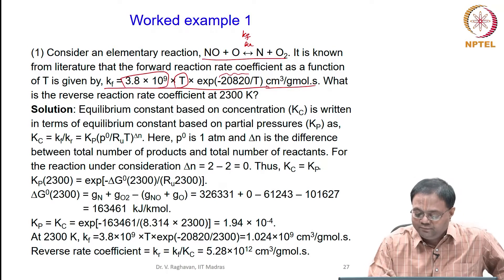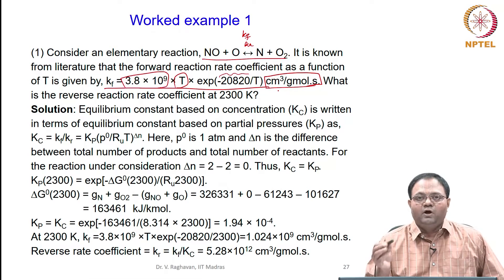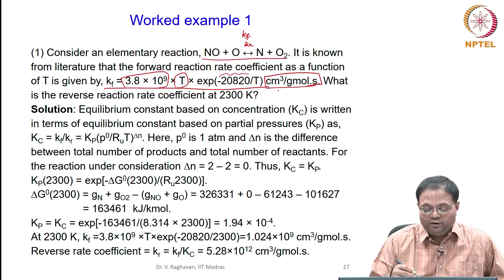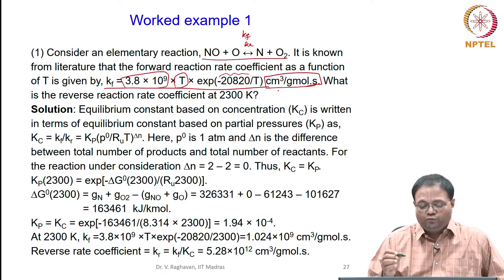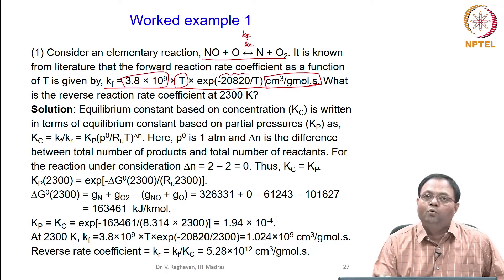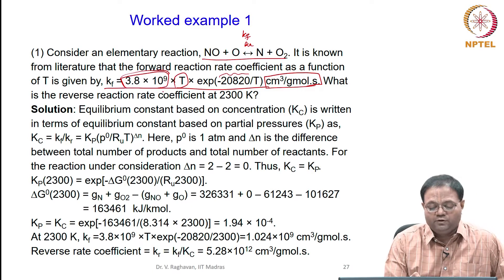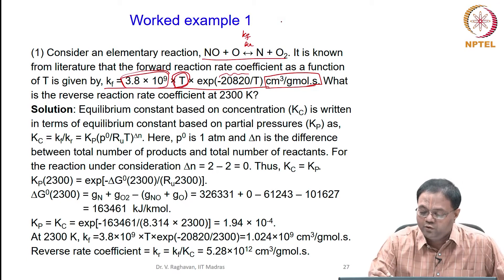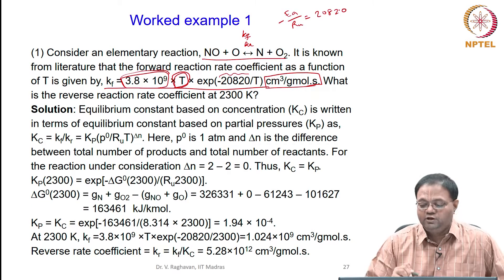Please note that the units are in centimeter-gram-mole-second, so we must be careful in selecting our units. When calculating the reaction rate, you need concentrations, so you need to take proper units. The pre-exponential factor is 3.8 × 10⁹, T to the power m where m equals 1, and the exponent of minus Ea/Ru equals 20,820.